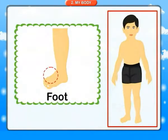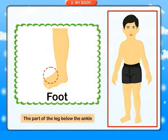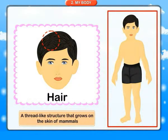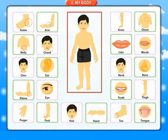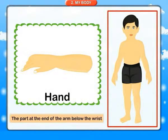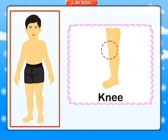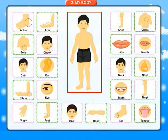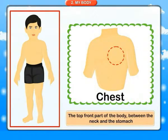Foot: the part of the leg below the ankle. Hair: a thread-like structure that grows on the skin of mammals. Hand: the part at the end of the arm below the wrist. Heart. Knee: the joint between the upper and lower part of the human leg. Chest: the top front part of the body between the neck and the stomach.